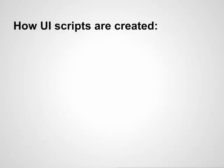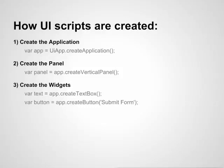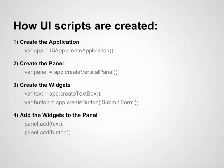There are five main steps in terms of creating your application within Google Scripts. First, you want to create the application. Secondly, you want to create the panel — in this example, we're using a vertical panel. Thirdly, you want to create the widgets themselves — in this example, we're using a text box and a button. Fourth, you want to add the text box and the button to the panel created in Step 2. And finally, you want to add the panel to the application itself created in Step 1.